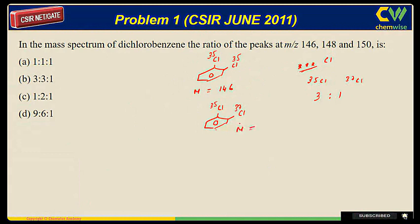And what about this 150? This one is Cl-Cl, this is 37 and this is 37, corresponding to 150. So now the question is, what about the ratio of these two peaks? Now we have identified the peaks, the mass corresponding to 146.